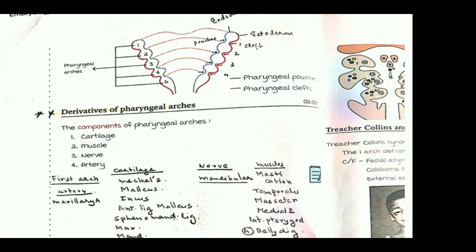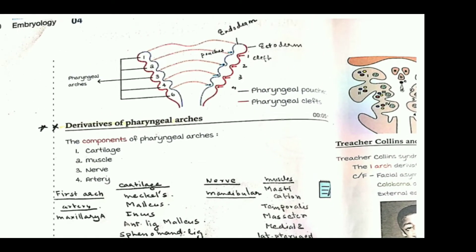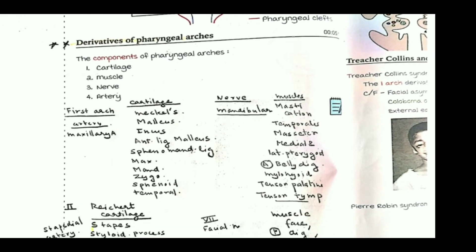In the diagram we can see arches one, two, three, four, and six. The outer layer is ectoderm and the inner layer is endoderm. The ectoderm spaces are called clefts, whereas the endoderm spaces are called pouches. We have four clefts and four pouches.